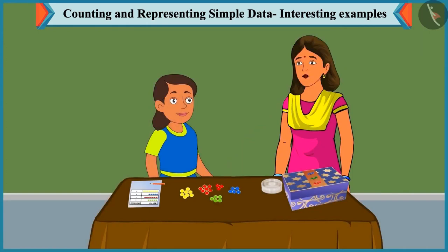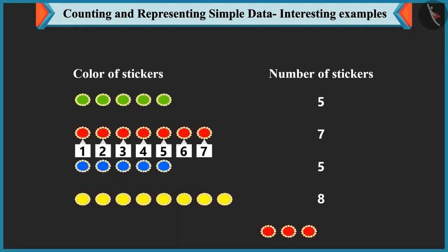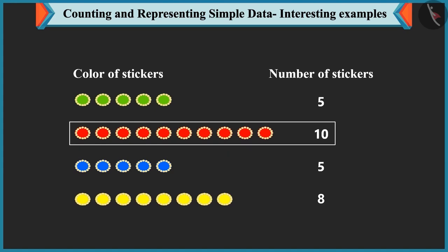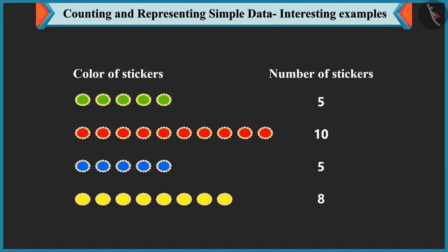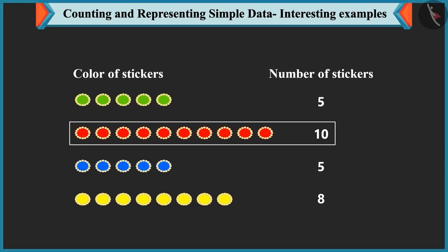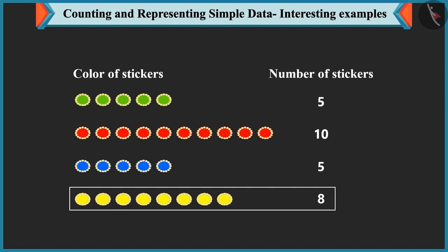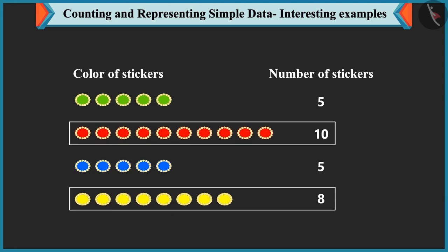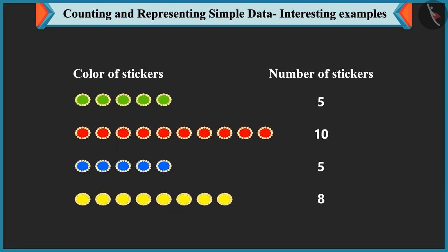Mummy gives Bubbly 3 more red stickers. Bubbly had 7 red stickers and adds 3 more to get 8, 9, 10 — now she has 10 red stickers. Mummy asks which color is now most. Bubbly answers red, with 10 — more than yellow's 8.